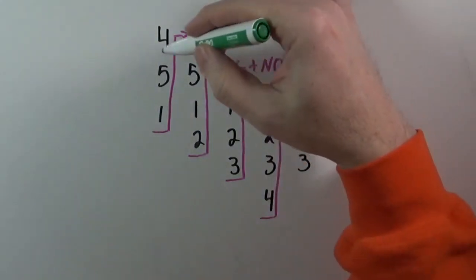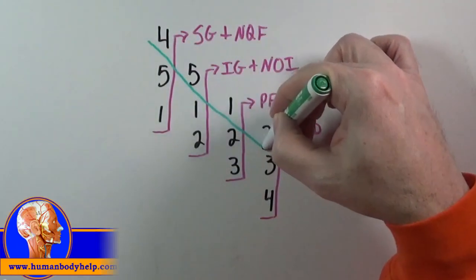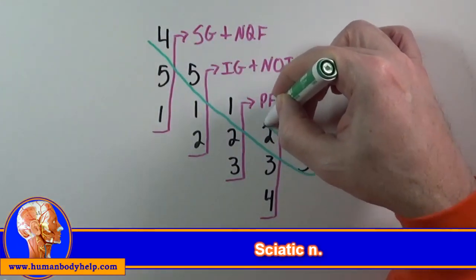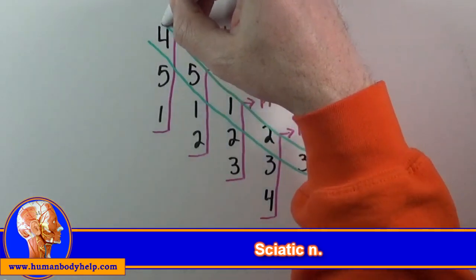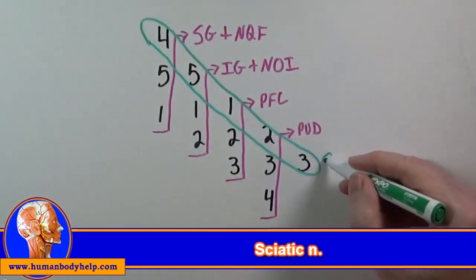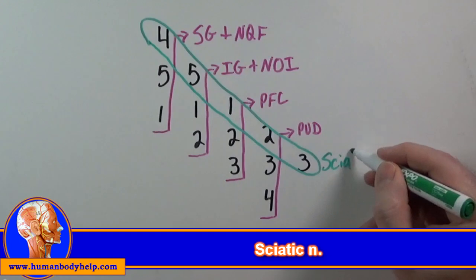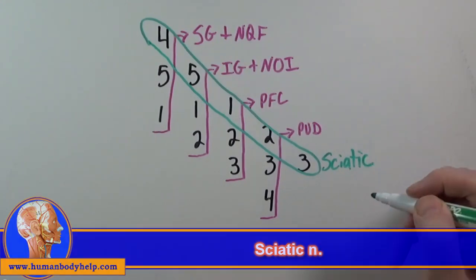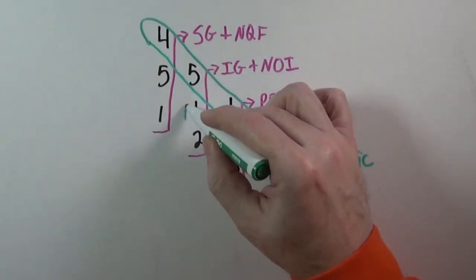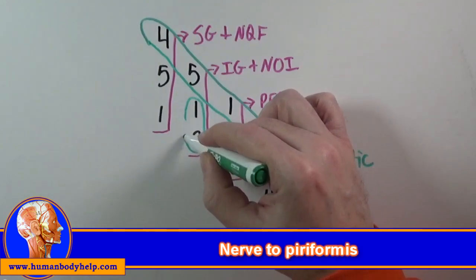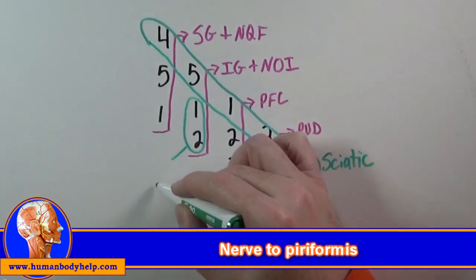Now using a different color, I'll circle all the levels that contribute to the sciatic nerve. L4, L5, S1, S2, and S3. Sciatic nerve. And finally, S1 and S2 over here make the nerve to the piriformis muscle.